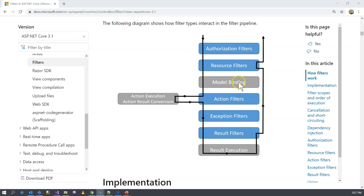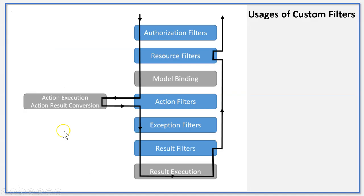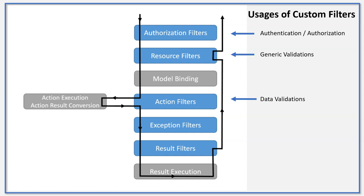We have different filters at different places for different functionalities. The resource filters happen before model binding, so they don't have access to the input data yet. Whereas the action filter happens after model binding, therefore it has access to the input parameters. Exception filters wrap around model binding, action execution, as well as action filters — if there are any exceptions thrown around these three filters, you can use the exception filter to handle them. Result filters can be used to apply some custom formatting to the results. And when everything is returned, it goes to the resource filter again and goes out to the caller of the Web API.